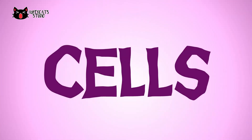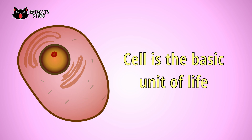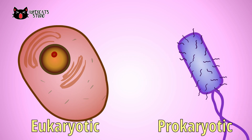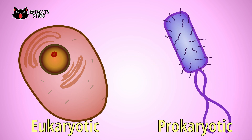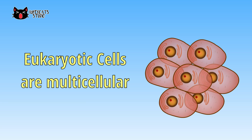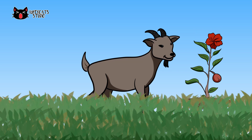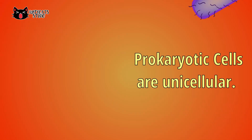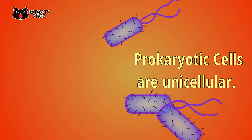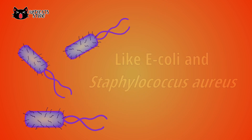Every living organism is composed of cells. A cell is the basic unit of life. Eukaryotic cells and prokaryotic cells are the two main types of cells. They differ in their structure and have their own functions. Eukaryotic cells are usually multicellular and have a true nucleus — examples include cells of animals and plants. Prokaryotic cells are unicellular organisms; examples are bacteria like E. coli and Staphylococcus aureus.